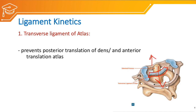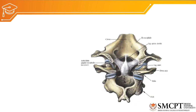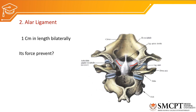This stabilizes the atlanto-axial joint. The next ligament is the alar ligament. It has two slips of alar ligament, each approximately one centimeter in length, bilaterally. It generates force that prevents excessive axial rotation at the atlanto-axial joint.